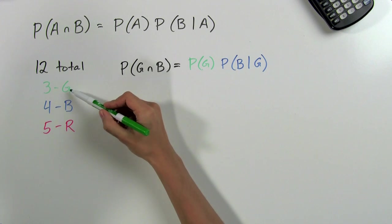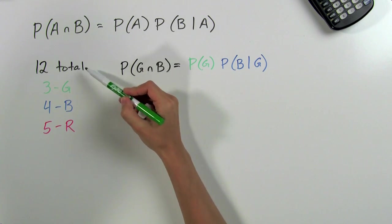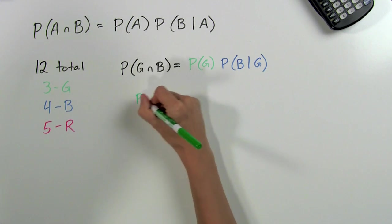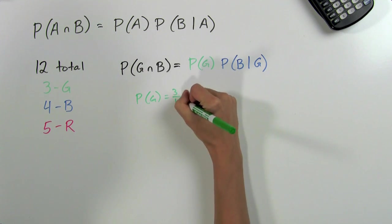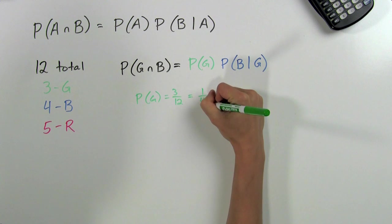Now we just need to figure out what those two probabilities are and we can find the answer. Let's start with the probability of pulling that first green marble. If there are three green marbles and twelve of them total, then the probability of pulling out one green marble is three divided by twelve, which can be simplified down to one divided by four.